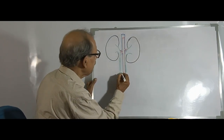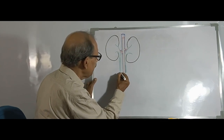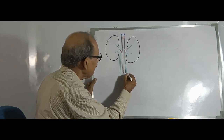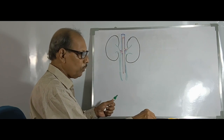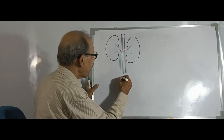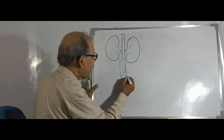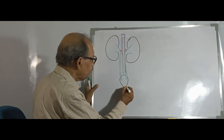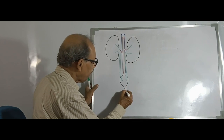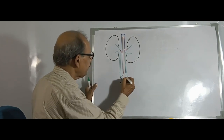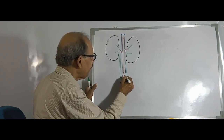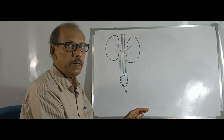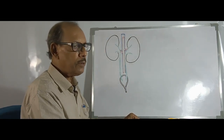Both the ureters are joining with the urinary bladder, which is situated at the floor of the pelvic cavity, and this is leading to the urethra. The urinary bladder is a thick-walled pouch. The whole organ is retroperitoneal in position.